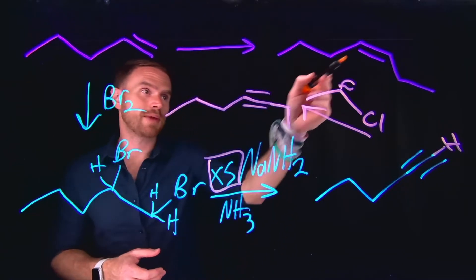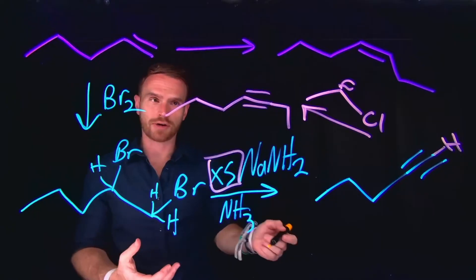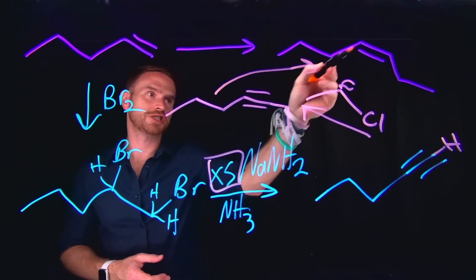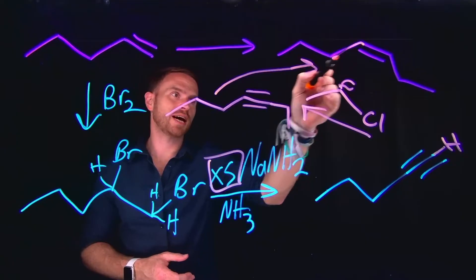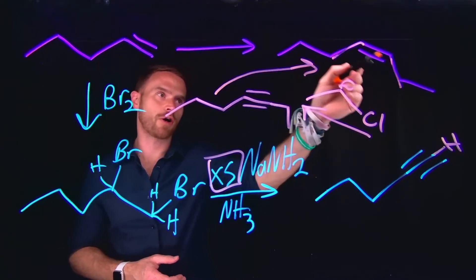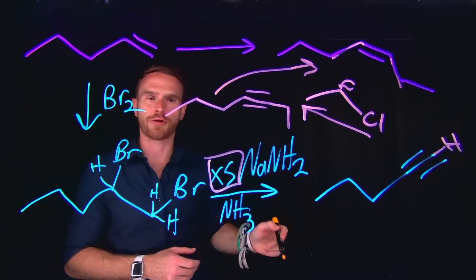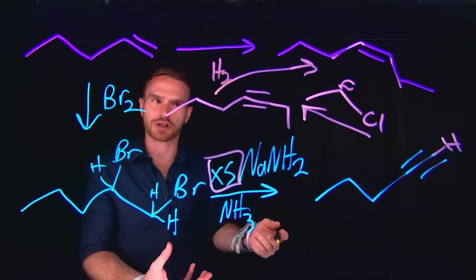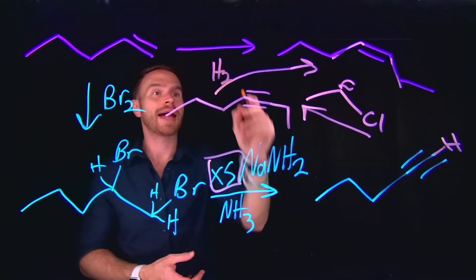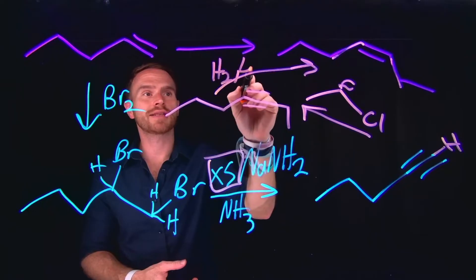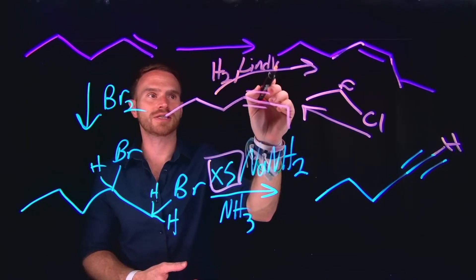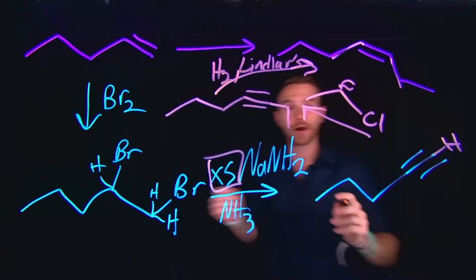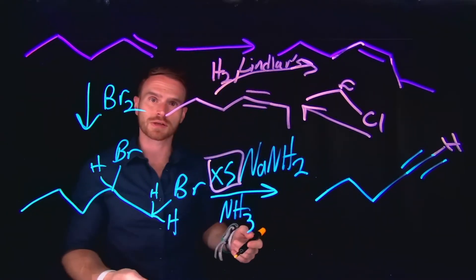From here, because we're making the Z or cis alkene, we know that we can use a special type of catalyst to generate this type of alkene, making sure that both R-group substituents are cis to one another. That catalyst requires hydrogen to do the reduction from an alkyne to an alkene, and then we can use Lindlar's catalyst in order to give us this very special stereochemical outcome for this alkene. Overall, this would be the multi-step synthesis.